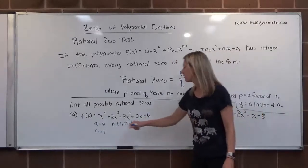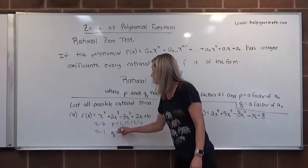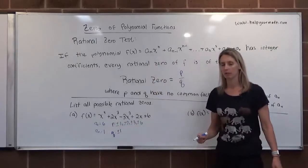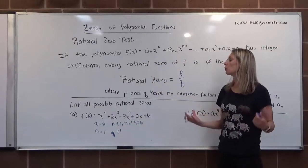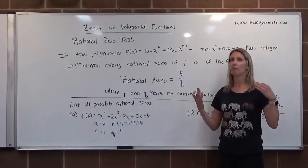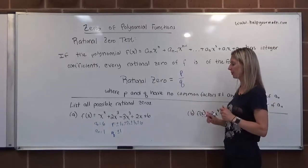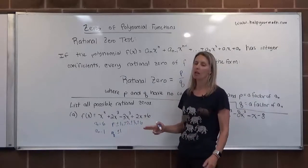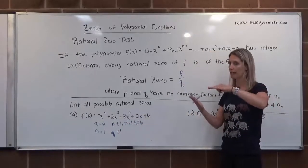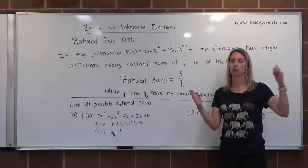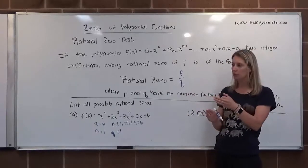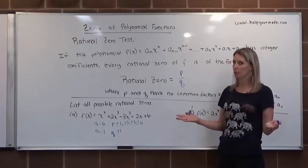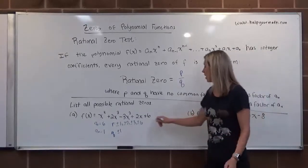These are all of the factors of 6. The factors of 1, that would be my Q, we only have positive and negative 1. So the way we determine the list of possible rational 0s is we take each P and divide it by each Q. And what you can do is you can separate the positives and negatives. You can combine them. You can just put 1 plus or minus in front. Talk to your professor. See what they want you to do.